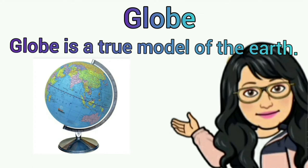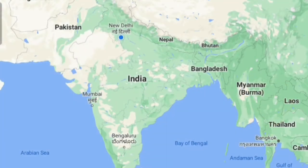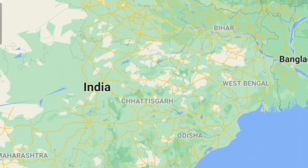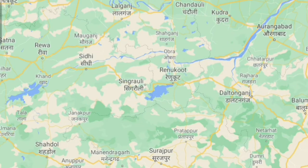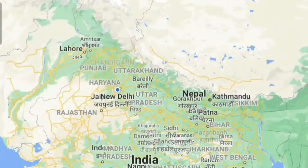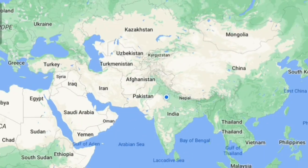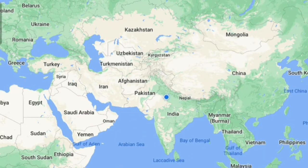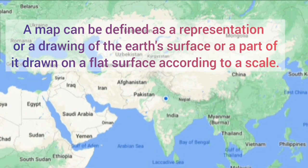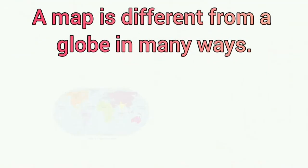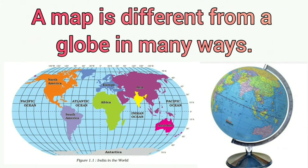Hence it is suggested to use a globe. A globe is a true model of the earth. It is useful when we want to study the earth as a whole, but when we want to study only a part of the earth — such as our country, state, district, towns, and villages — it is of little help. For that purpose we use maps. A map can be defined as a representation or a drawing of the earth's surface or a part of it, drawn on a flat surface according to a scale.